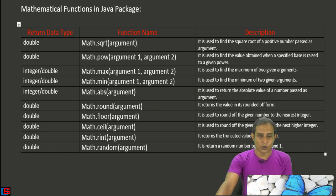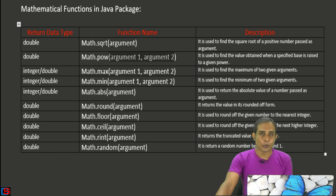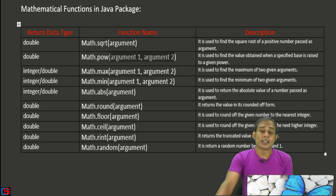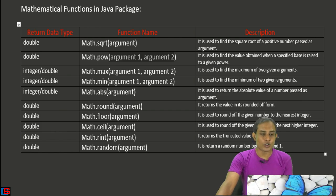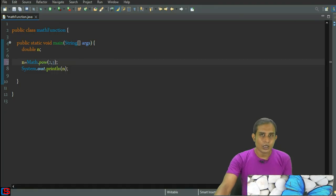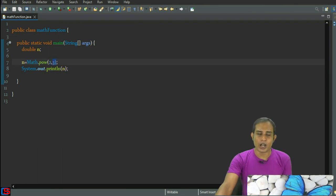The next function is math.pow. Using math.pow we can raise a number to a specified power. In math.pow we have to provide two arguments: the first argument is the number or numerical value, and the second argument is the power. So to compute a to the power n, we write math.pow(a, n). math.pow always returns a double data type value. For example, to find 2 cubed, I write math.pow(2, 3), and the result is 8.0.